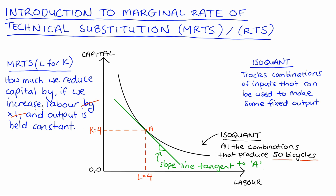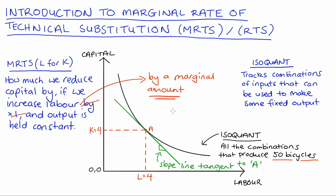With derivatives, the interpretation shifts slightly: our MRTS of labour for capital is described as how much we reduce capital if we increase labour by a marginal amount with output held constant. Without calculus, changes are discussed in discrete terms — per unit changes. At more sophisticated levels we talk about marginal changes, but either way we're fundamentally talking about substitutions between inputs to production whilst holding output fixed.